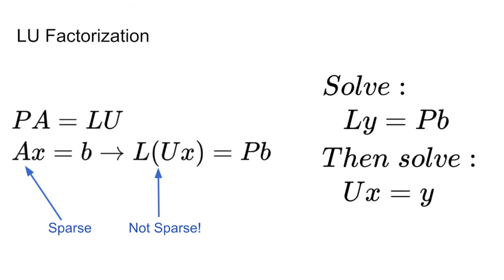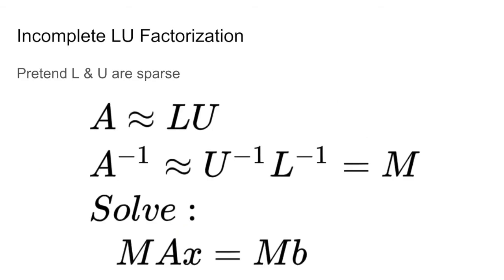In this case, we can approximate the LU decomposition by setting all the values that are near 0 to 0, forcing the sparsity in the decomposition. This results in incomplete LU factorization.